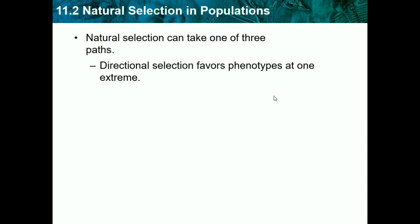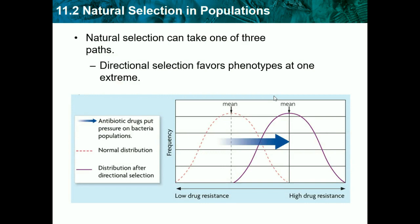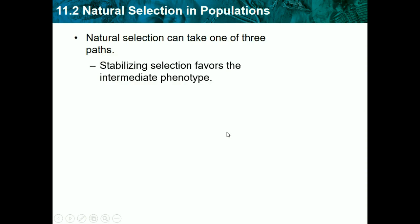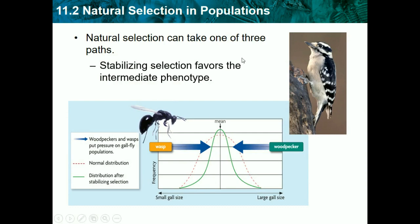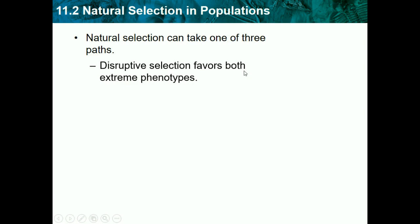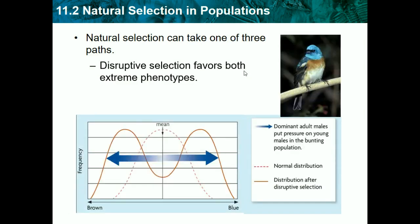Natural selection can take one of three paths. Directional selection favors phenotypes at one extreme, so over time alleles shift toward one extreme — either high or low. Stabilizing selection favors the intermediate phenotype, so most individuals become more average. Disruptive selection favors both extremes — not the average — and is probably a fast type of evolution.